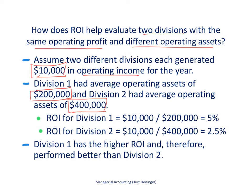We can actually calculate return on investment to level the playing field by looking at income relative to the assets required to produce it. Division one had a return on investment of 5% — that's $10,000 divided by $200,000. Division two had a return on investment of 2.5%, because they required double the assets to generate the same amount of income. Therefore, division one has the higher ROI than division two — that's one example of how return on investment is helpful in evaluating two divisions with the same operating income.